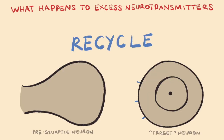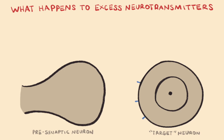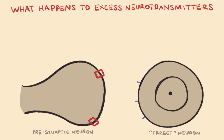The second main way to remove excess neurotransmitters is to recycle the neurotransmitters themselves. This involves excess neurotransmitters binding to special receptors on the outside of the presynaptic membrane, and then being brought in via receptor-mediated endocytosis. Once back inside the presynaptic neuron, these neurotransmitters are packaged back up into vesicles for later use.